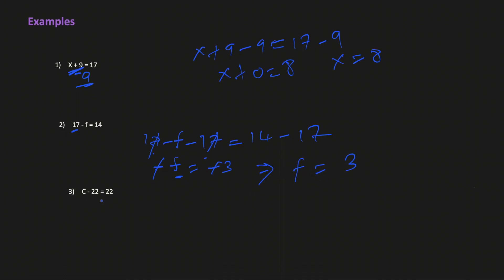The last example is c minus 22 equals 22. Since the 22 is negative, we add 22 on both sides: c minus 22 plus 22 equals 22 plus 22. The minus 22 and plus 22 cancel to 0, so we get c equals 22 plus 22, which is 44.